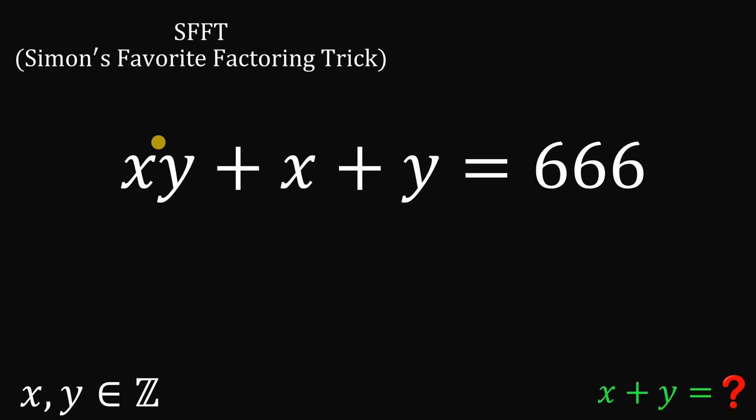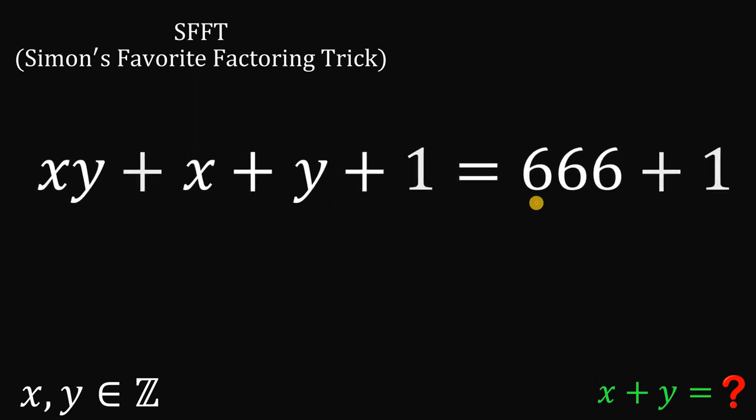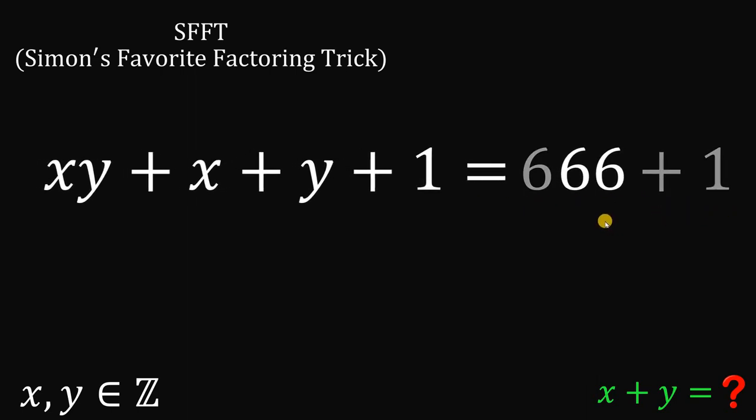Now, it involves adding a constant to both sides of this type of equation so that factoring by grouping can be accomplished on the left side of the equation. So, what we're going to do is add 1 on both sides. Now, take note, 666 plus 1, this will give us 667.